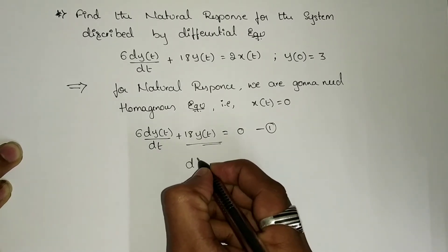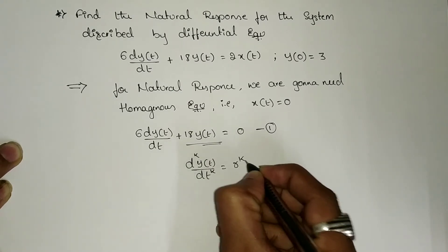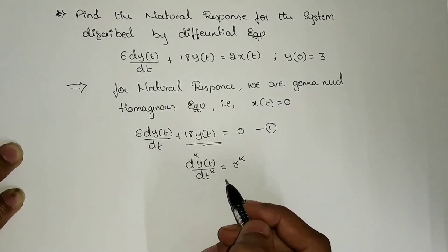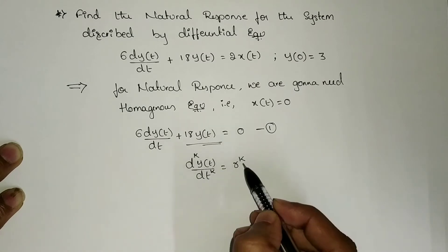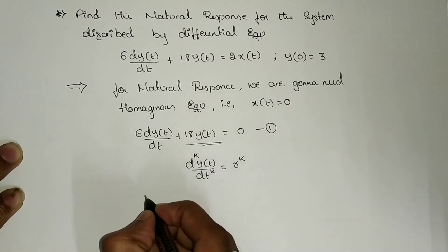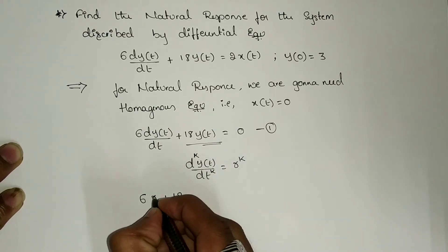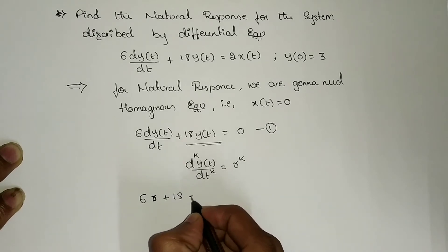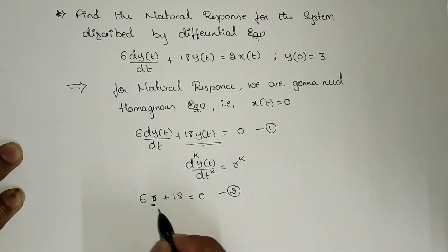In equation number 1, we replace dy(t)/dt — the k-th order differentiation of y(t) with respect to t is equated to r^k. If k is 1, r^1; if k is 2, r^2; if k is 0, r^0 = 1. Substituting into equation 1: 6r + 18 = 0, marking it as equation number 2.